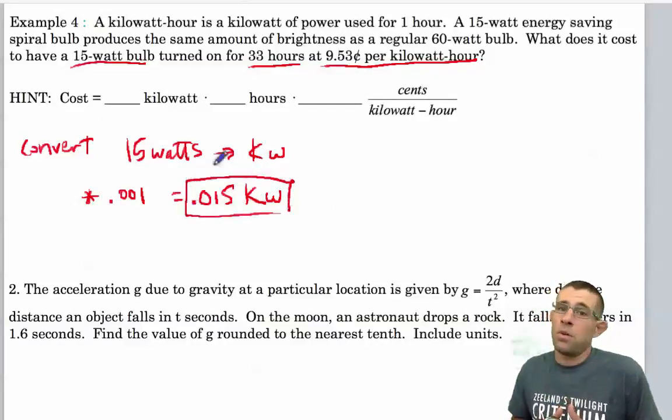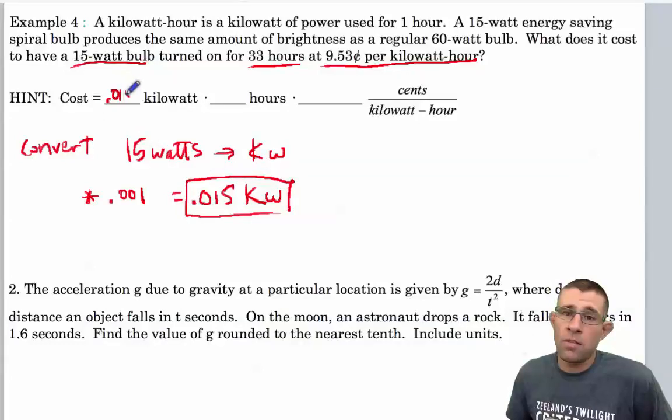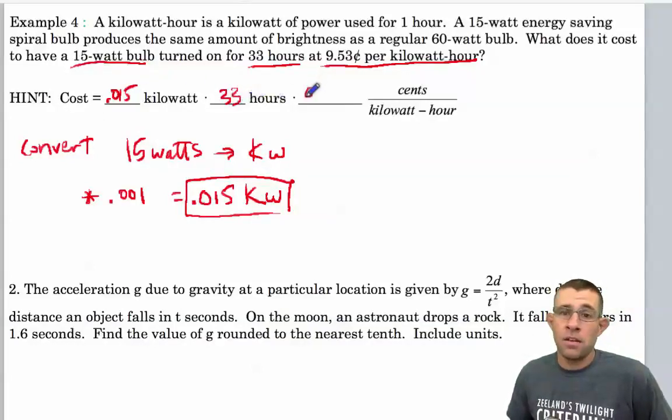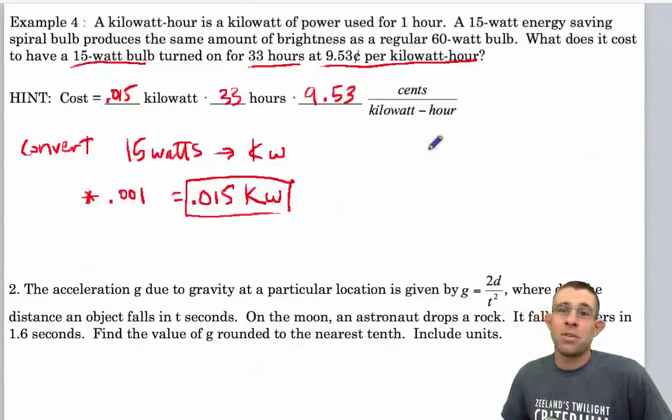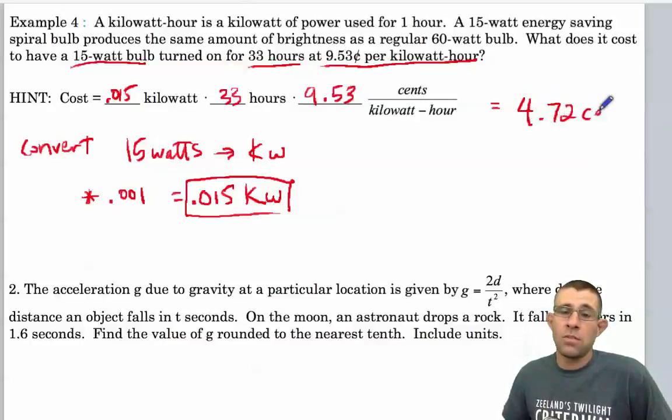And now I'm simply going to take that 0.015 kilowatts, multiply it by my 33 hours, and multiply that by the 9, or sorry, 9.53 cents per kilowatt hour. And that results in 4.72 cents.